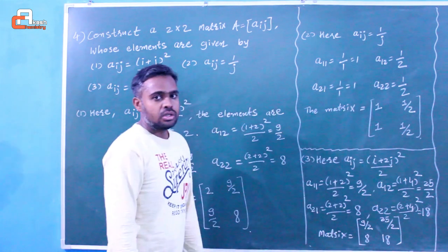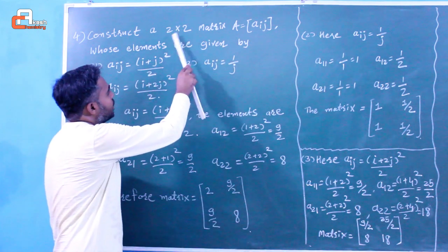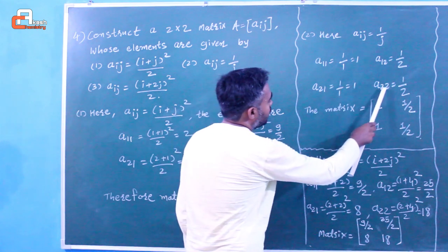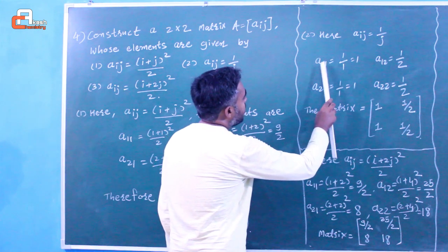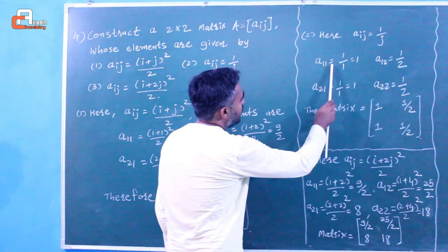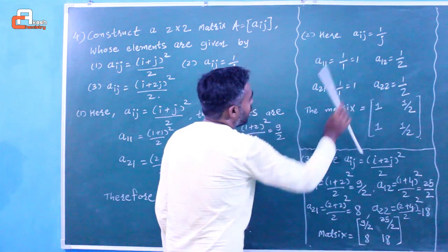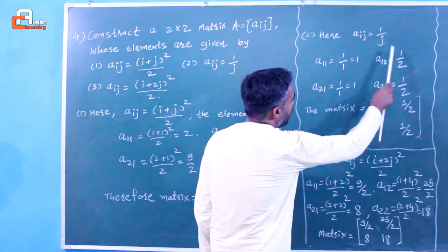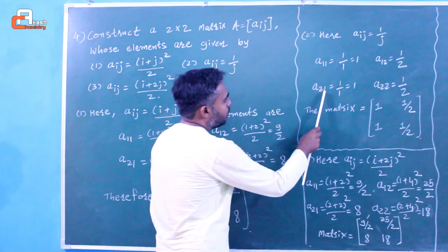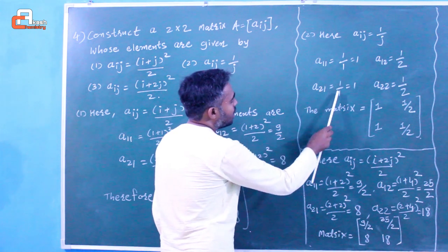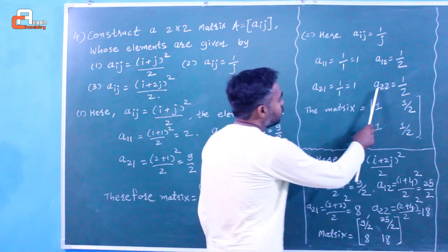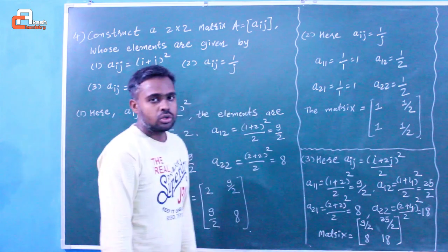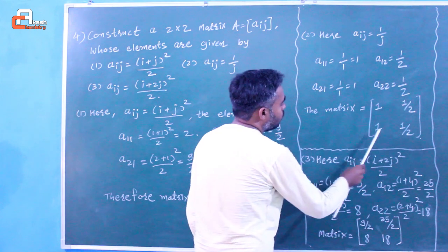In the second example, the formula is aij equal to 1 upon j. We construct the same 2 by 2 matrix with elements a11, a12, a21, a22. For a11, put j equal to 1, so a11 equals 1 upon 1 equals 1. For a12, put j equal to 2, so a12 equals 1 upon 2. For a21, put j equal to 1, so a21 equals 1 upon 1 equals 1. For a22, put j equal to 2, so a22 equals 1 upon 2. Therefore the matrix equals [1, 1/2; 1, 1/2].